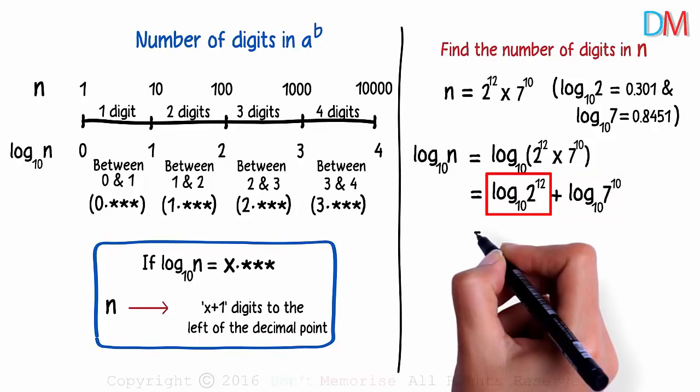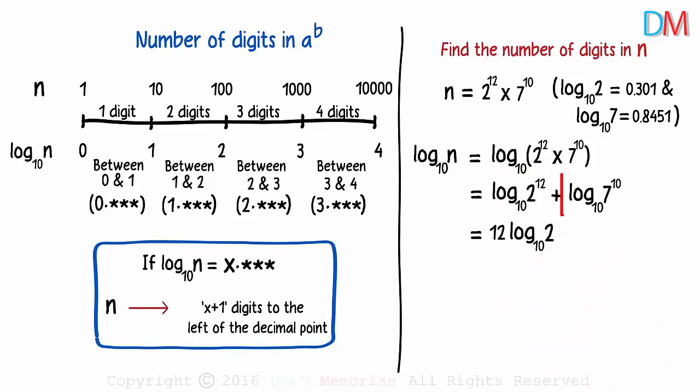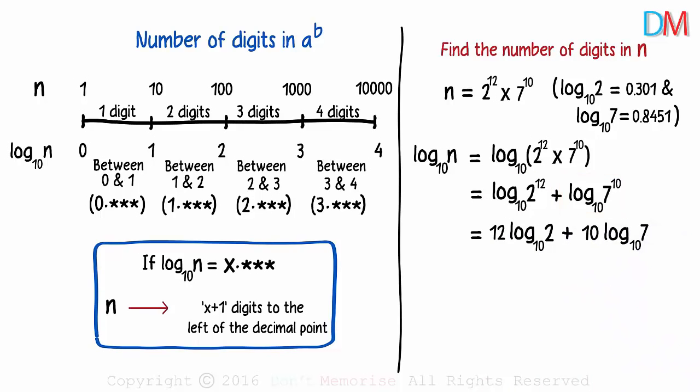Applying it to the first term, we get 12 times log 2 to the base 10. And applying it to the second one, we get 10 times log 7 to the base 10. And we have been provided with these two values.